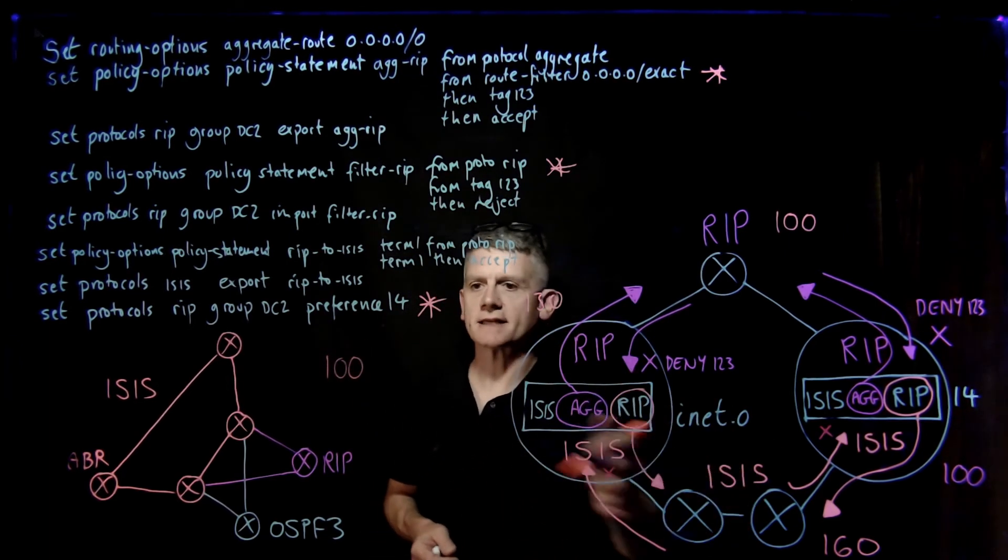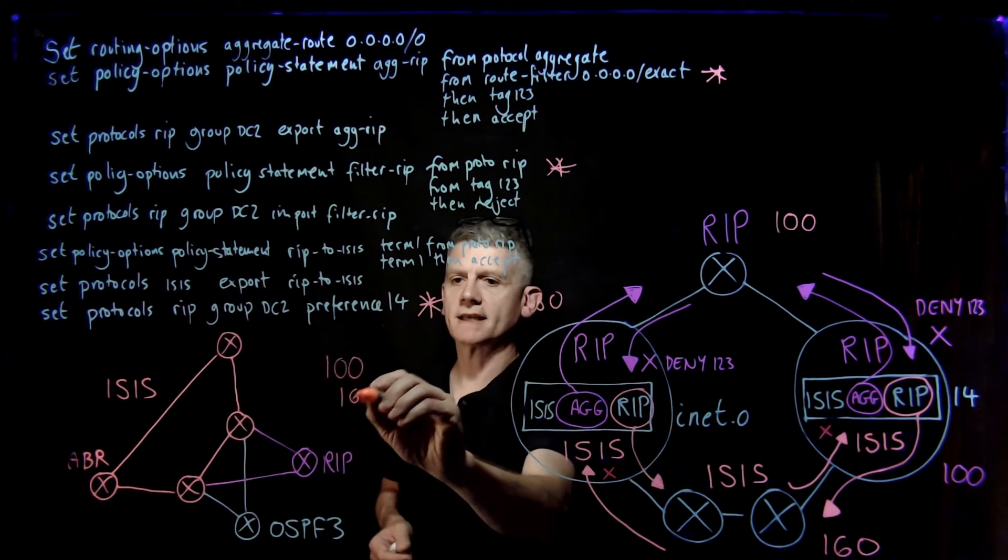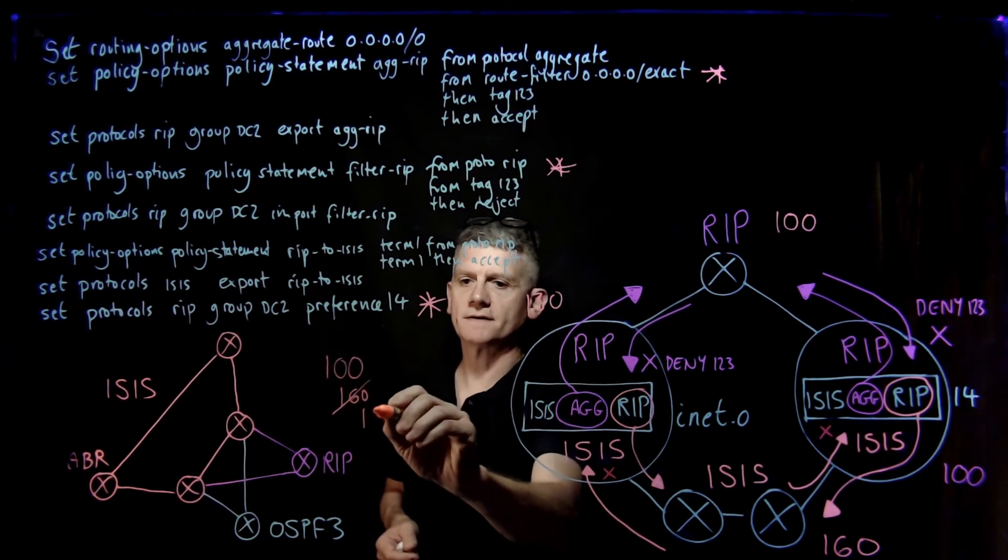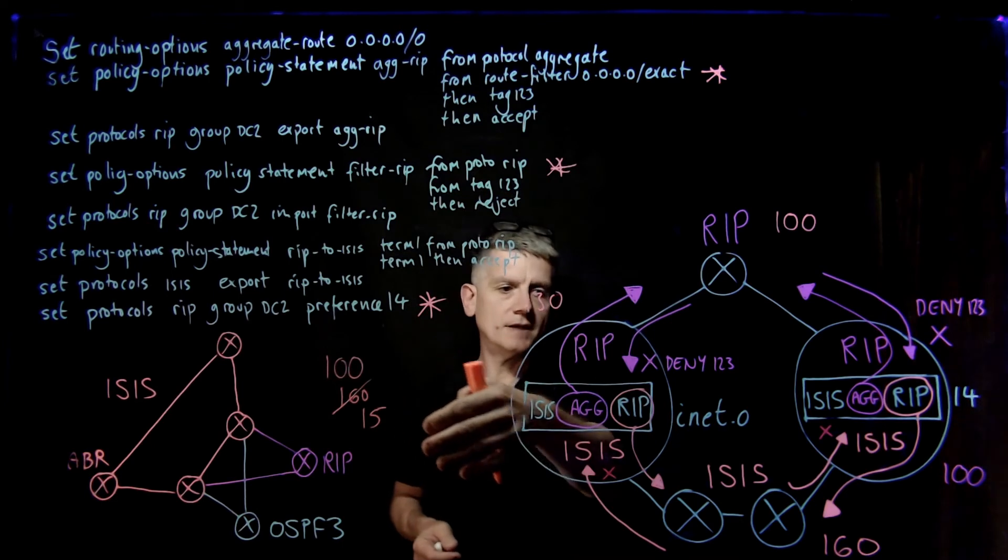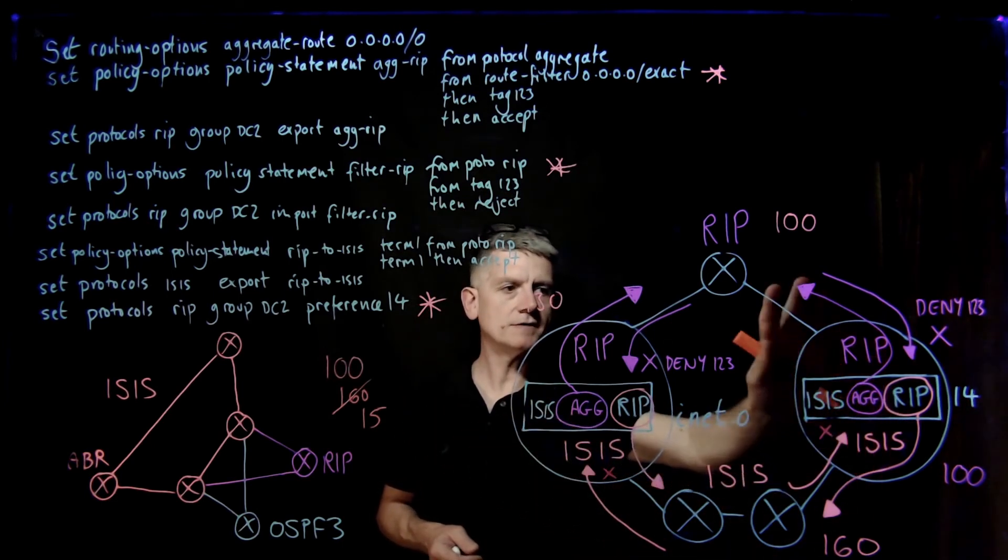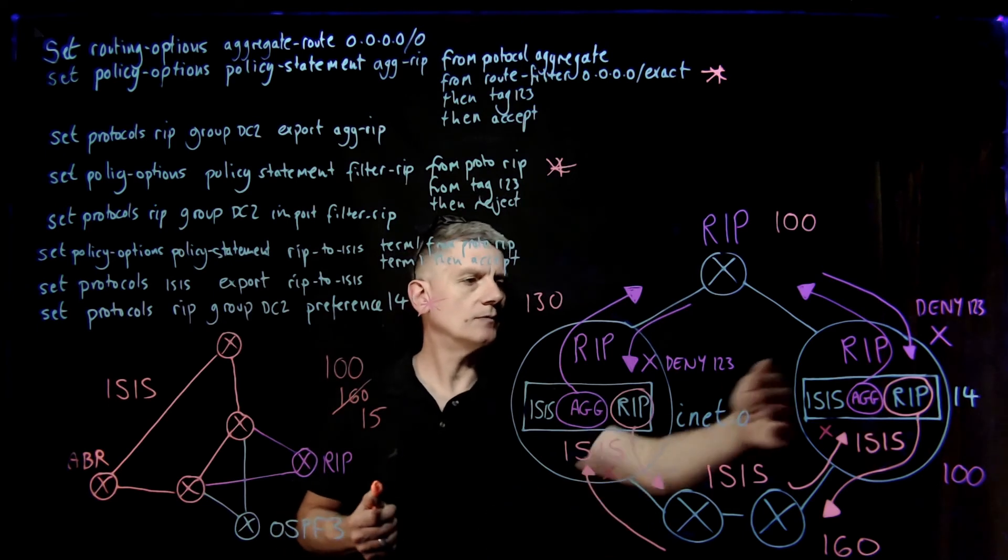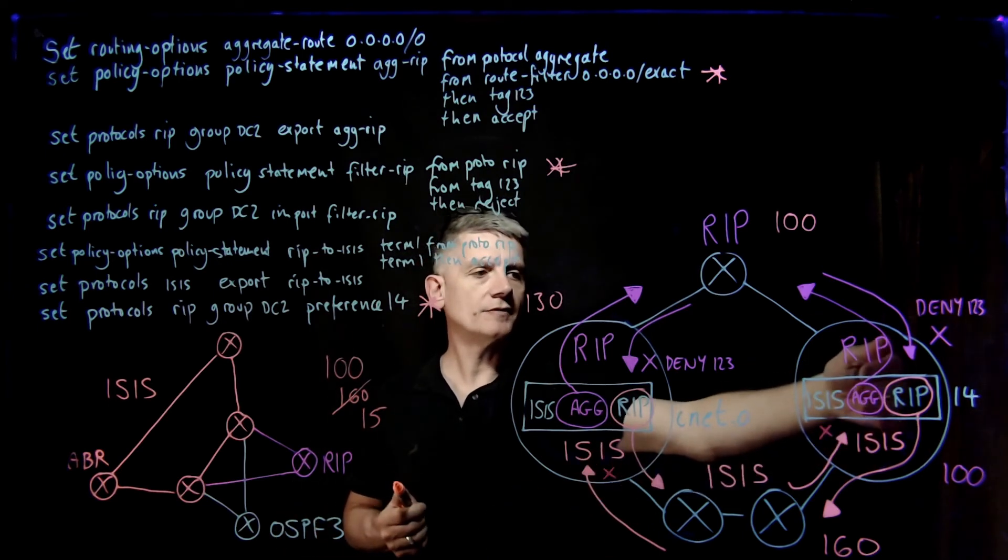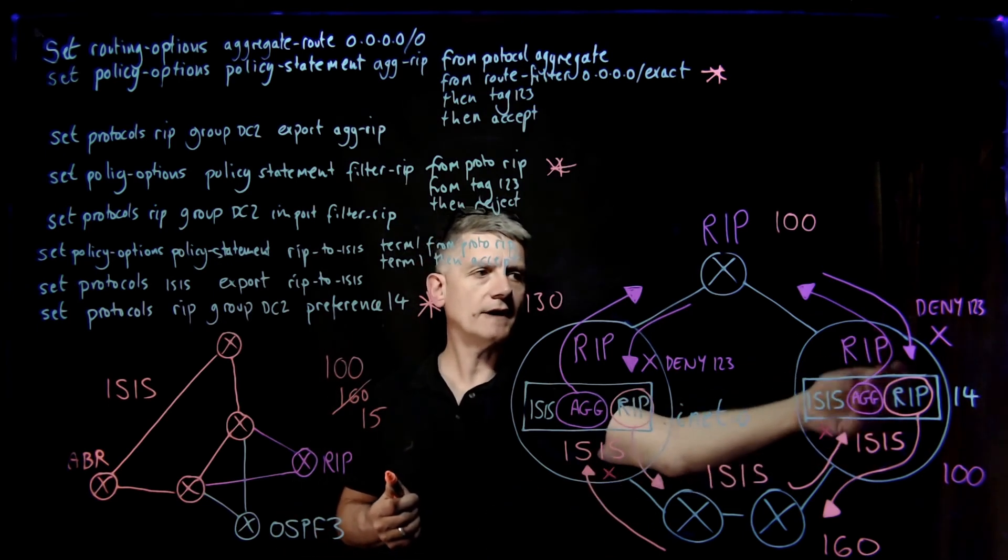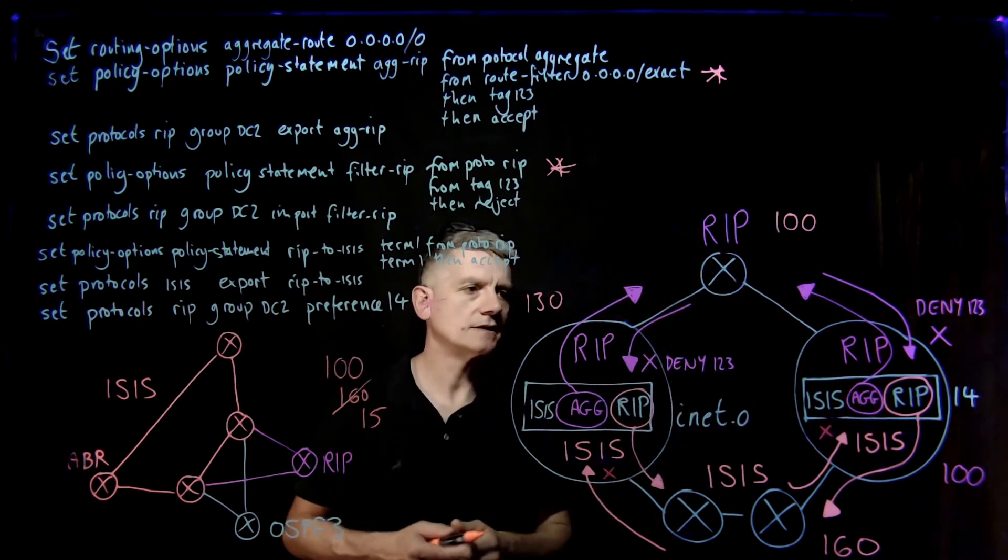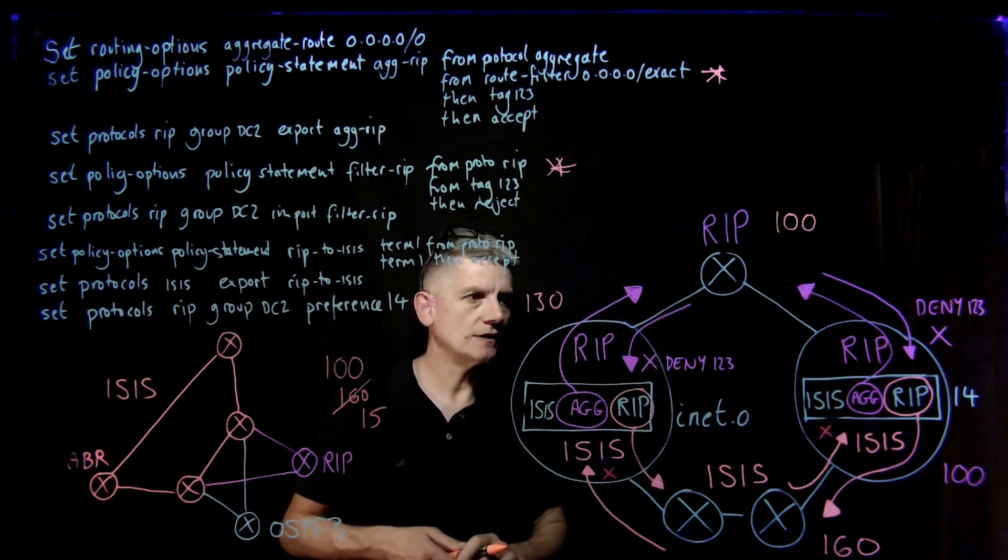As it goes into the ISIS, instead of taking the preference of 160, it's actually going to take a preference of 15. And that 15 preference is going to go to the other ASBR. It would dominate the original RIP route. It would replace the RIP route if we weren't careful. And that would be then advertised the other direction. We would get suboptimal routing, possibly a routing loop.